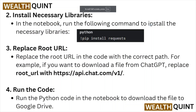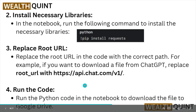Install the necessary libraries in the notebook by running the following command: exclamation pip install requests. Then replace the root URL in the code with the correct path — for example, if you want to download a file from ChatGPT, replace this particular code and run the Python code in the notebook to download the file.